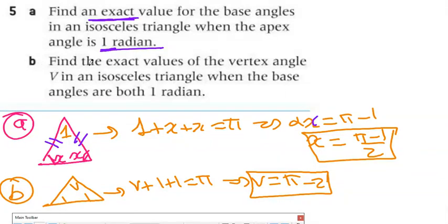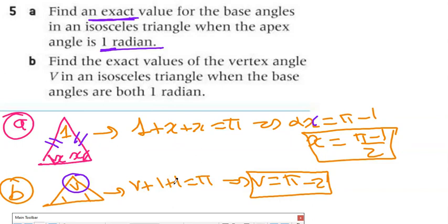Part B: find the exact value of the vertex angle in an isosceles triangle when the base angles are both 1 radian. The sum of angles is π. So V + 1 + 1 = π, which gives V = π − 2.